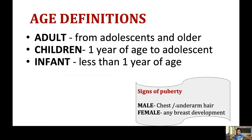In basic life support, we treat three age groups. Adults are from adolescence and older — in males, chest and underarm hair indicates adolescence; in females, any breast development is the sign. Children are from one year of age to adolescence. Infants are less than one year of age.